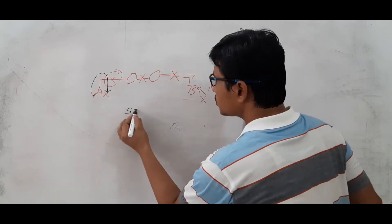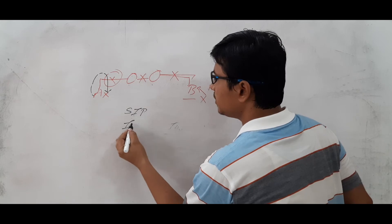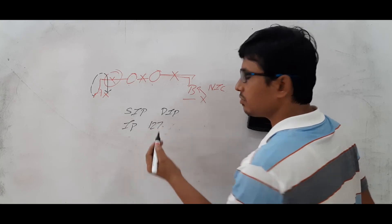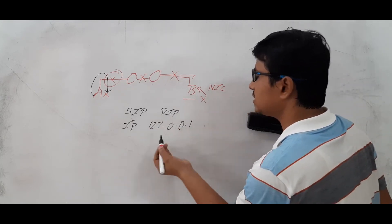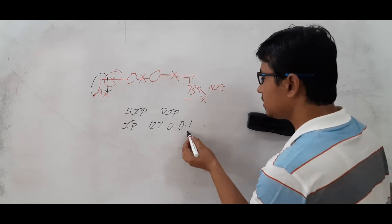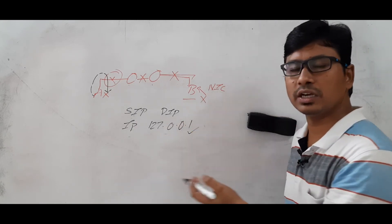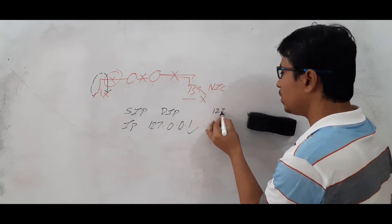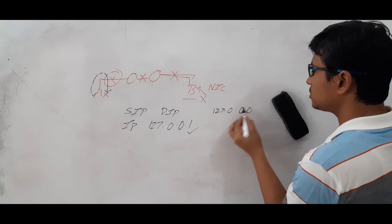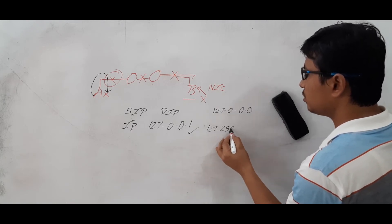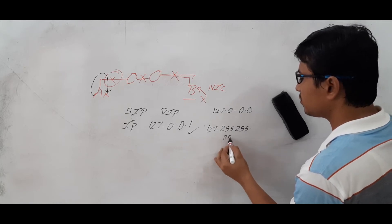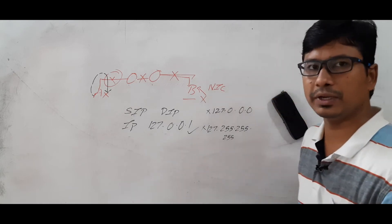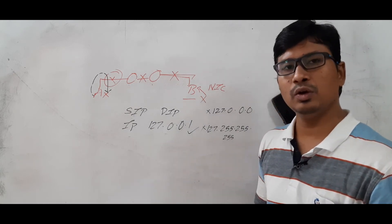That is why in the source IP address you keep your own IP address, and in the destination IP address you keep something like 127.0.0.1. You should not use all zeros or all 255s after 127 — meaning 127.0.0.0 and 127.255.255.255 should not be used. Other than those two, any IP address from the range starting with 127 can be used.